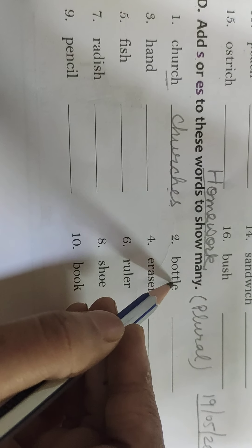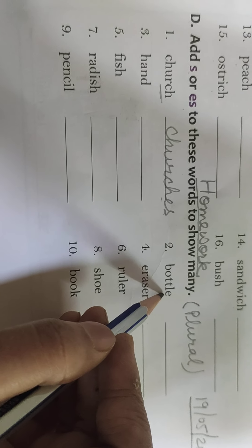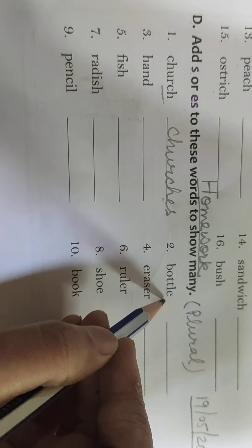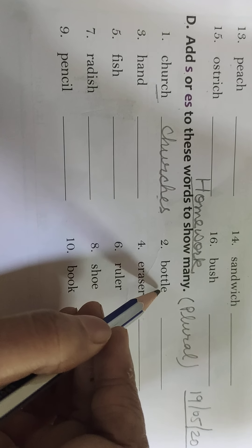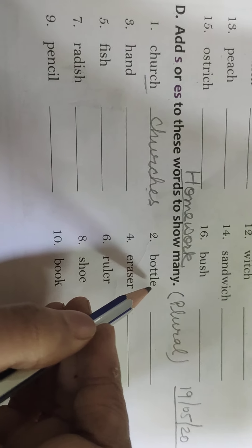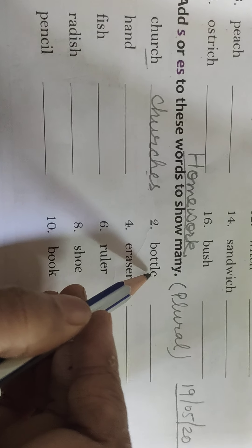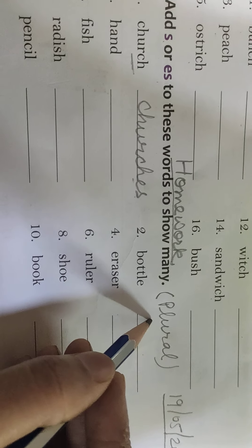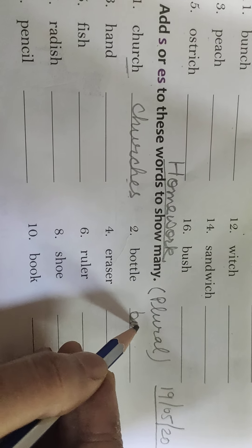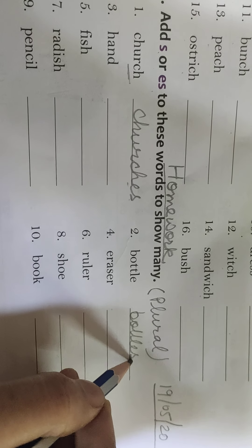Number 2 is bottle. E hai last may. S nahi hai. O nahi hai. Double S nahi hai. SH nahi hai. X nahi hai. CH nahi hai. So we will add only S. Now we will write bottles. Bottles. Okay.